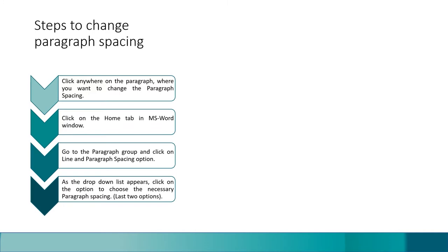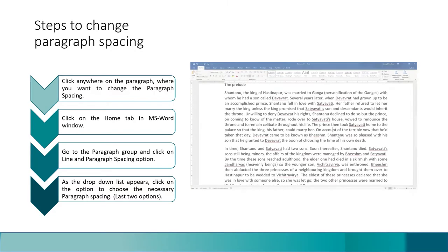Now let's learn the steps to change paragraph spacing. First, click anywhere on the paragraph where you want to change the paragraph spacing. Then click on the Home tab in the MS Word window, go to the Paragraph group, and click on the Line and Paragraph Spacing option. As the drop-down list appears, click on the option to choose the necessary paragraph spacing — that would be the last two options. Let's take a look at the video.